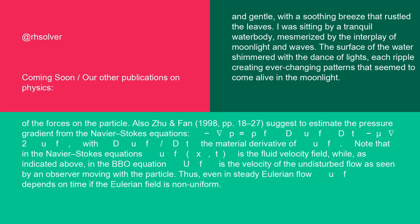Also, Zhu and Fan (1998, pages 18 to 27) suggest to estimate the pressure gradient from the Navier-Stokes equations: -∇p = ρf duf/dt - μ∇²uf,